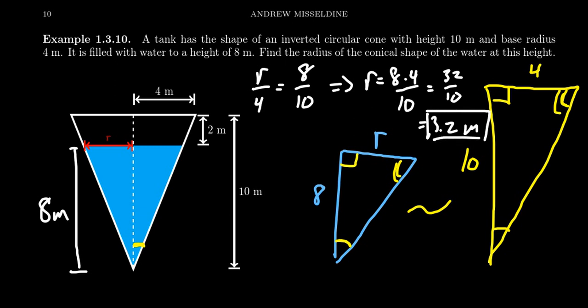We can do this for greater generality. What if the height is unknown — say, x meters at any moment in time? We can set up these exact same proportions. What's so special about the number 8 here? Nothing really. If the height is x, then the subsequent values change accordingly — you end up with 4x in the proportion.